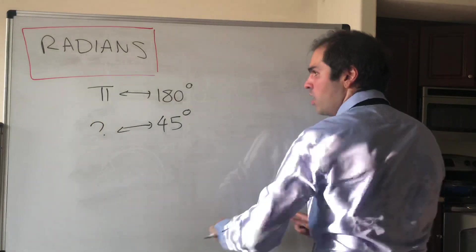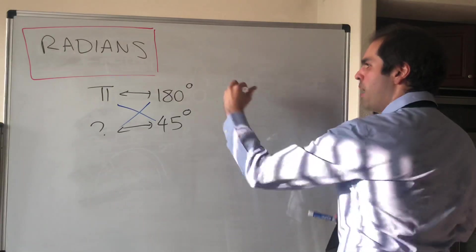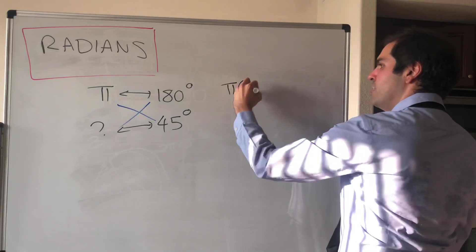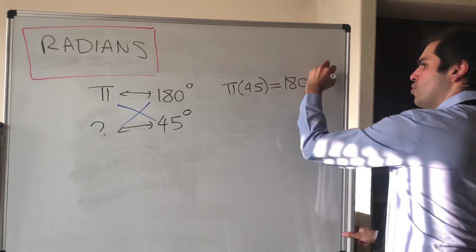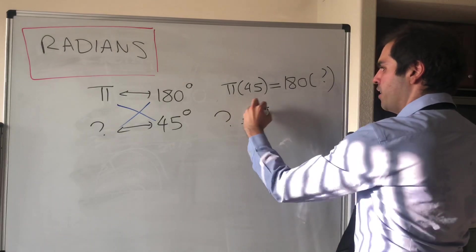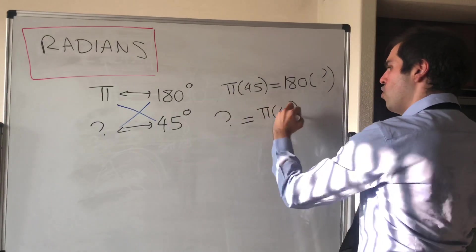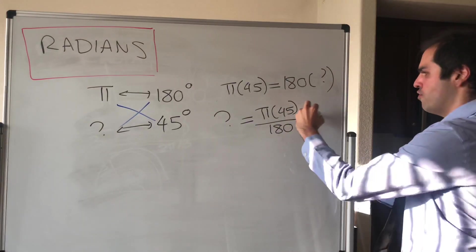Again you cross multiply and you get π times 45 equals 180 times question mark, and so question mark equals π times 45 over 180, which I believe is just π/4.